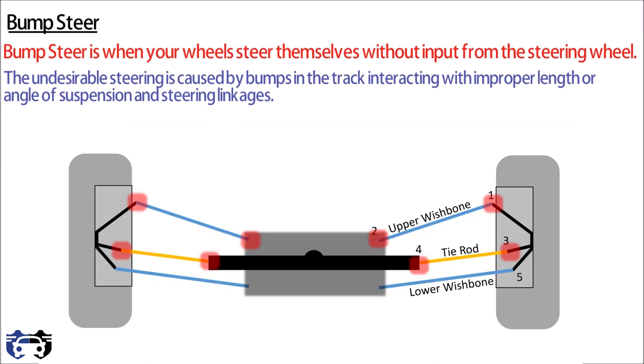Similarly, number five and six are the inner and outer joints of lower wishbone connected to knuckle and chassis of vehicle respectively. The axis passing from the outer joint of upper and lower wishbone is called kingpin axis and it gives kingpin inclination in this view and caster angle in the side view of tire.